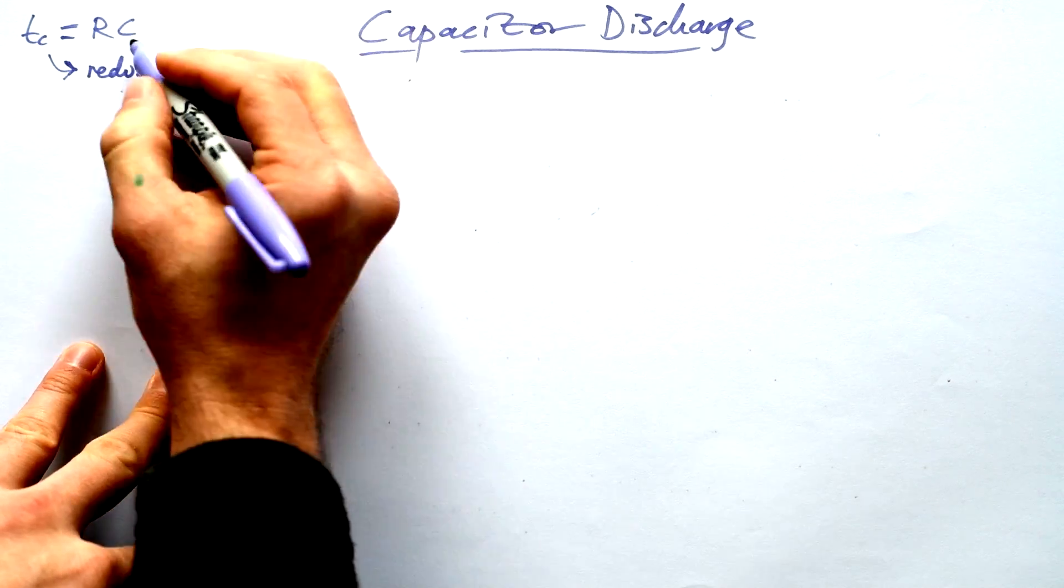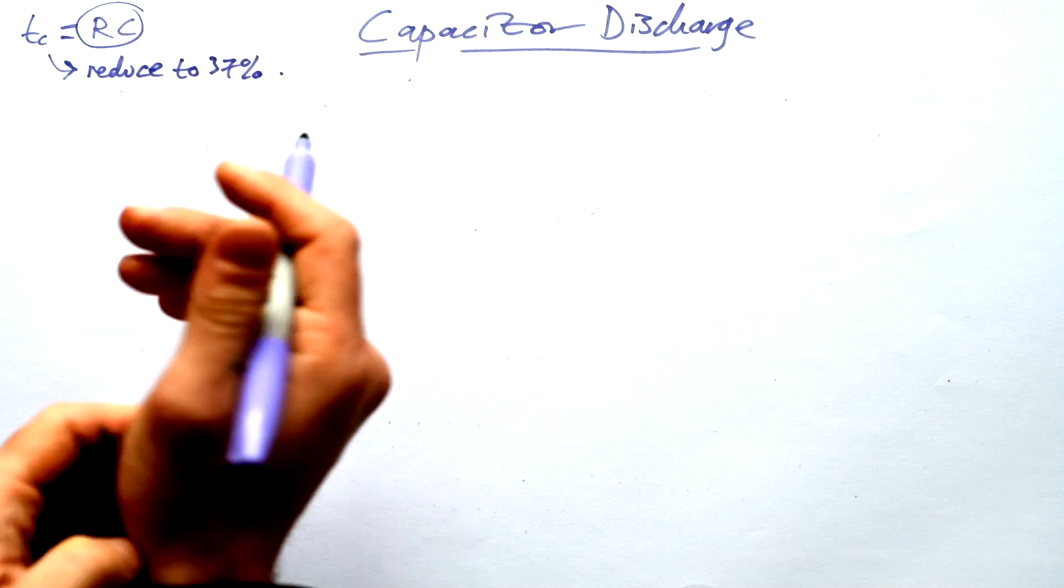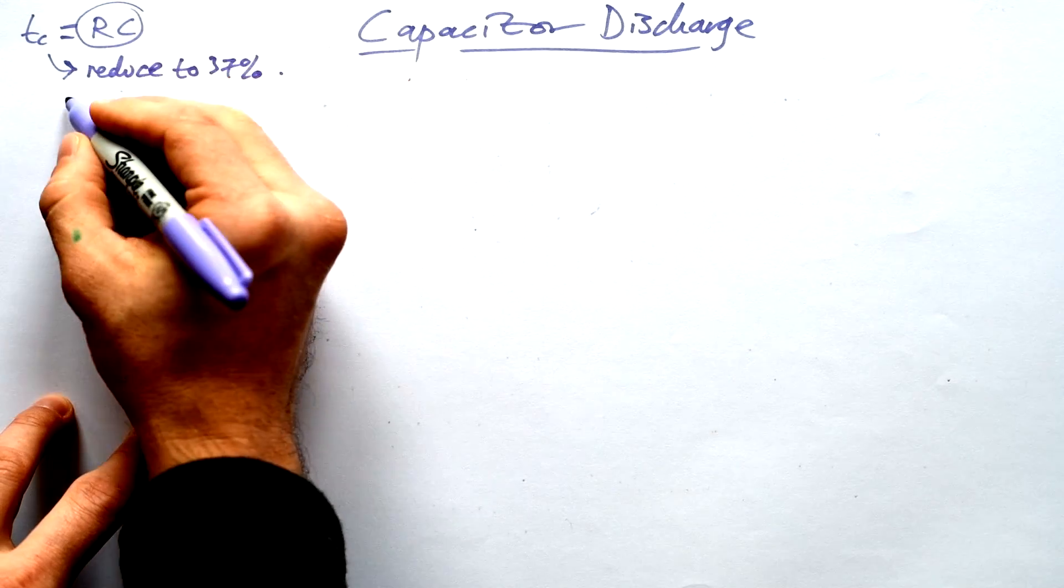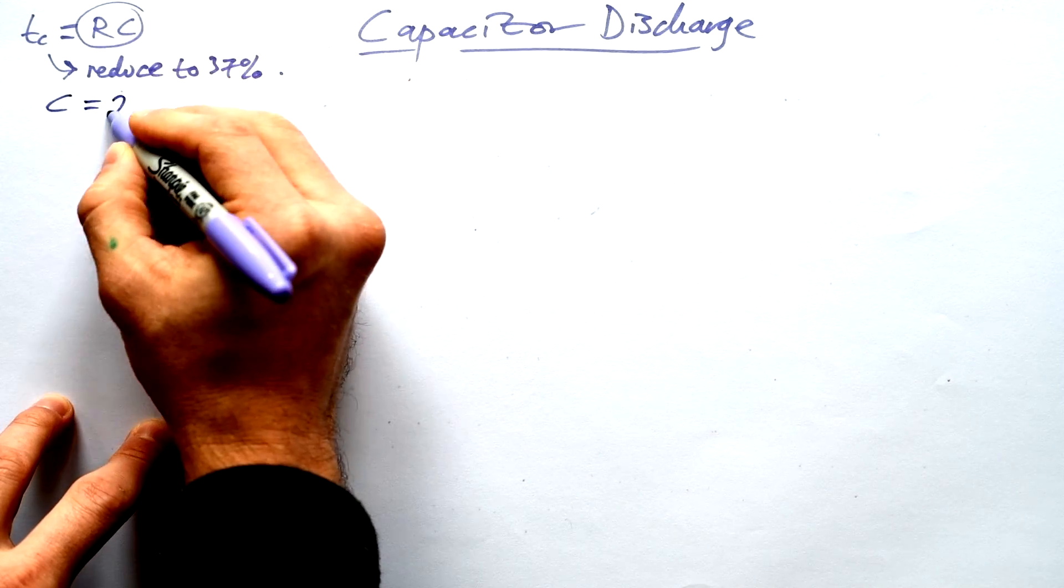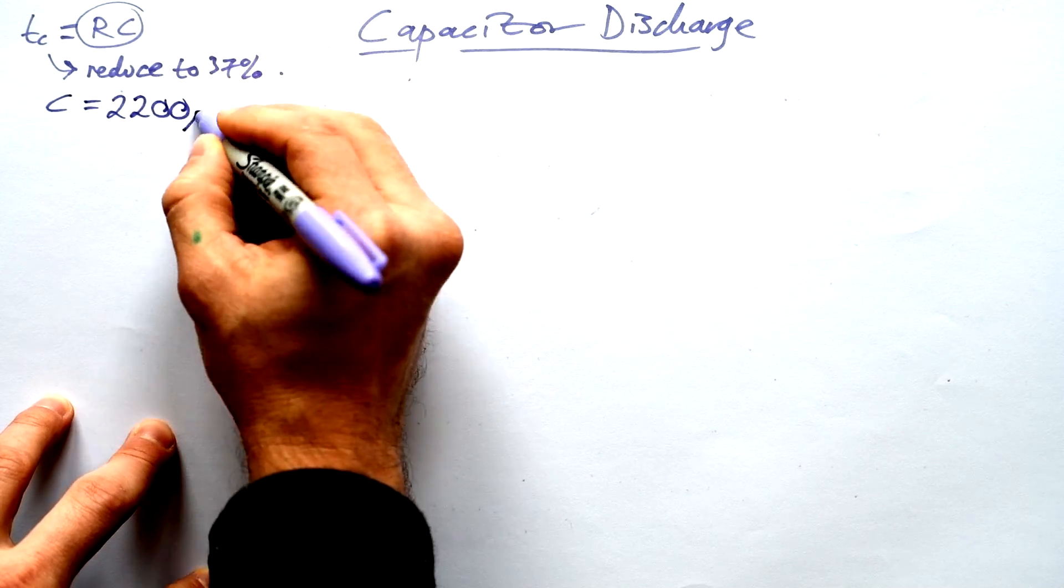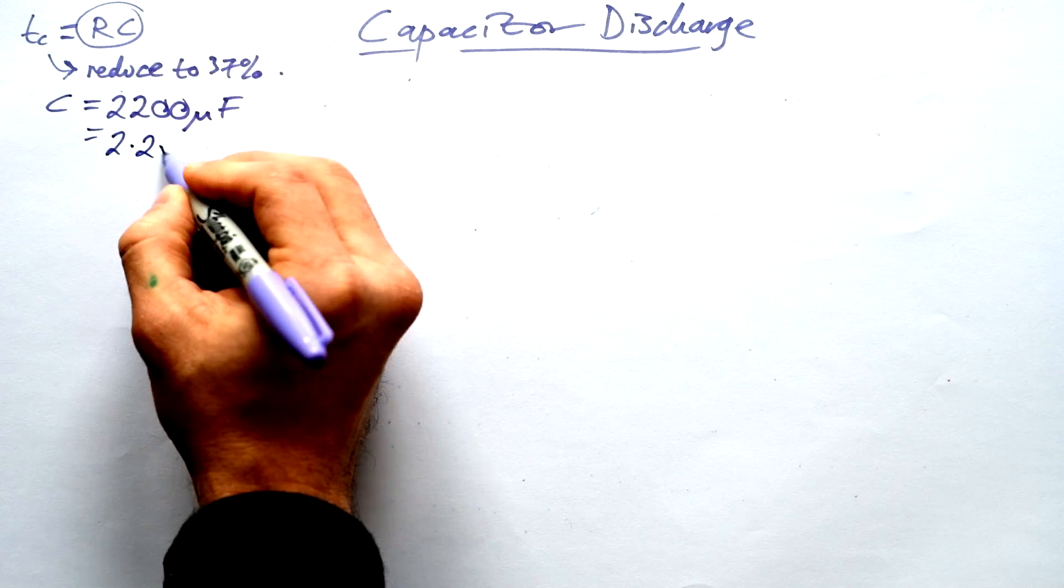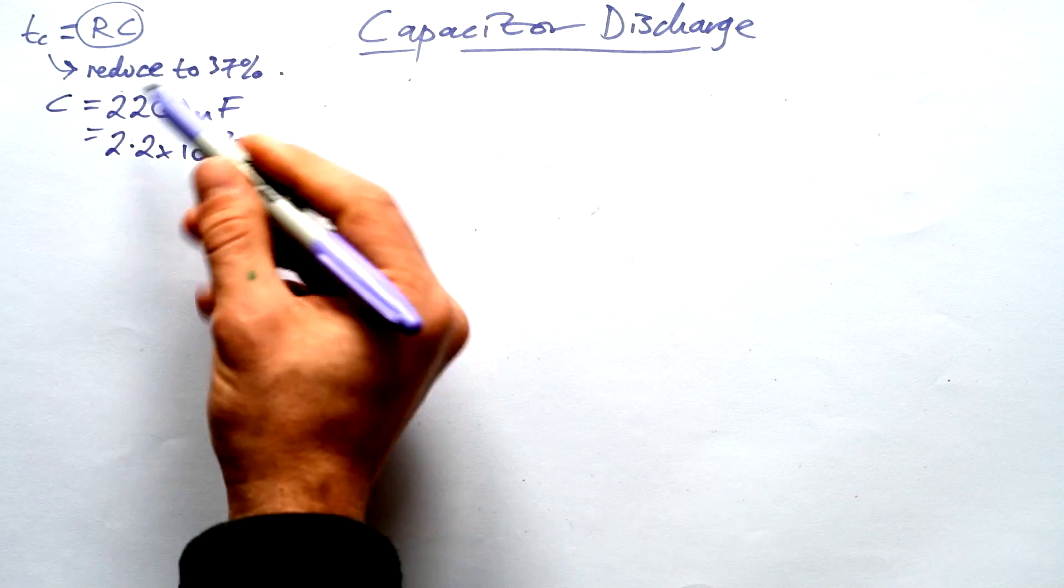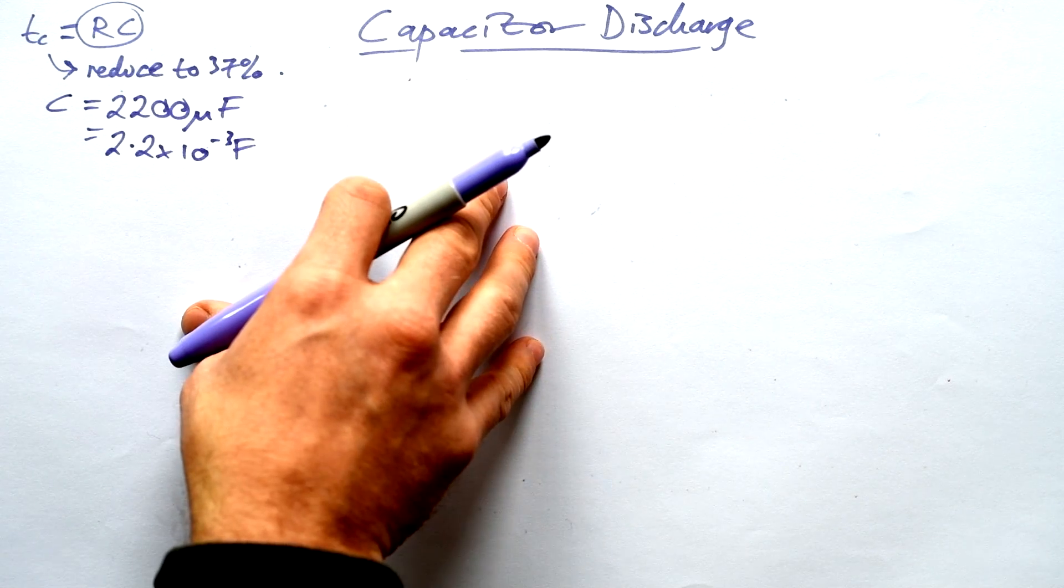So we want to choose a combination of RC that gives us a fairly big time constant. Now, a fairly standard capacitor that you get is 2200 microfarads. So that's 2.2 times 10 to the minus 3 farads. Yeah, I know that's 2.2 millifarads, but it's microfarads that capacitances are usually given in.